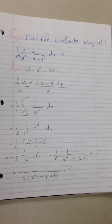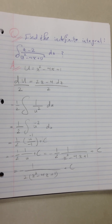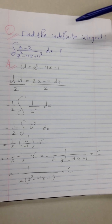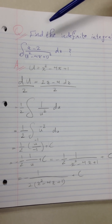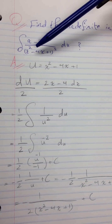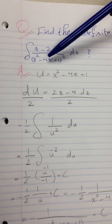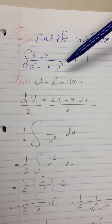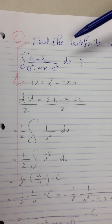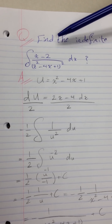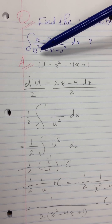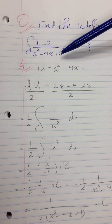We have this question from the integration section about u-substitution. Find the indefinite integral of (x minus 2) over (x squared minus 4x plus 1) squared, dx.